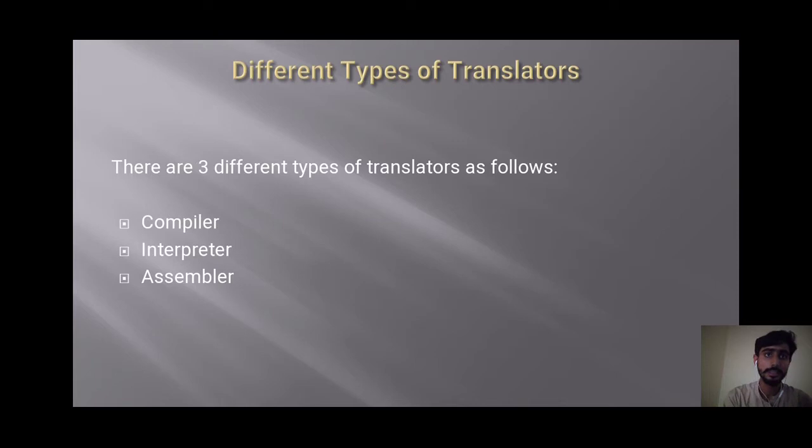Different types of translators. There are three types of translators as follows: Compiler, Interpreter, and Assembler.